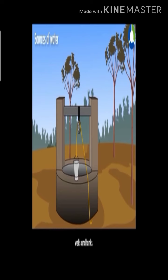Water and water vapor do not have a fixed shape. Ice has a fixed shape. Sources of water: we get water from different sources like rain, rivers and lakes, streams, ponds, hand pumps, taps, wells, and tanks.